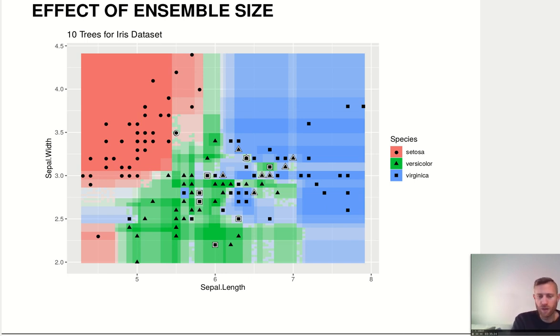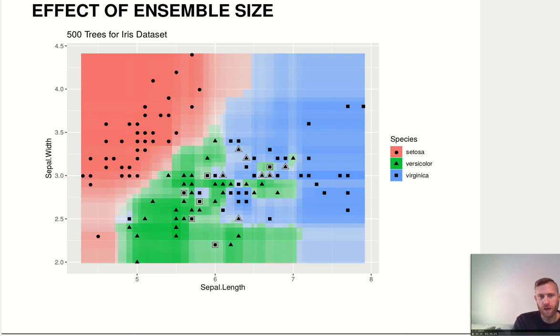As we increase the number of trees, by averaging over so many different step functions, we actually start to see something that looks almost smooth. You can still see this is kind of rectangular with jumps, but it becomes much more smooth. With 500 trees, we get these decision regions for the Iris dataset.